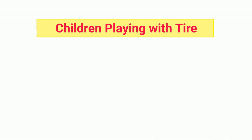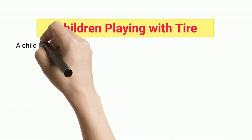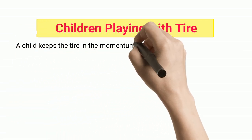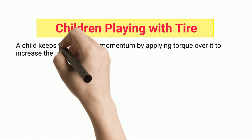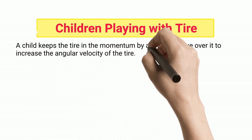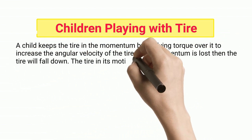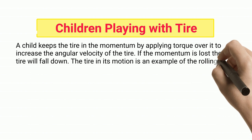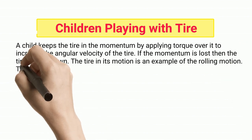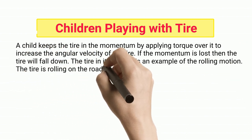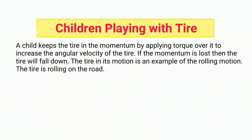Children playing with tire. A child keeps the tire in motion by applying torque over it to increase the angular velocity of the tire. If the momentum is lost, the tire will fall down. The tire in its motion is an example of rolling motion.